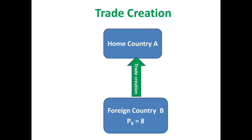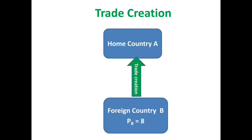We can also analyze trade creation using demand and supply curves. In this figure, DA represents the demand curve for product X and SA represents the supply curve of the home country, while the supply curve of partner country B is shown as a horizontal line PB — a perfectly elastic supply curve. When there is a tariff, the price is $1.50. When they form the economic integration, the price falls to $1.00.